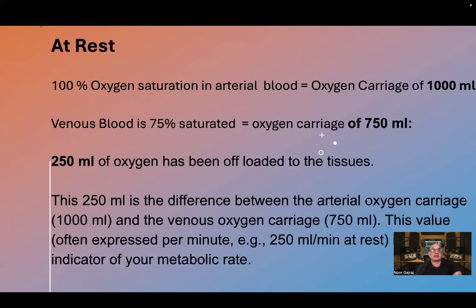At rest, 100% oxygen saturation in arterial blood equals an oxygen carriage of 1000 ml. Venous blood is 75% saturated, giving an oxygen carriage of 750 ml. This means 250 ml of oxygen has been offloaded to the tissues — the difference between the arterial oxygen carriage of 1000 ml and the venous oxygen carriage of 750 ml.